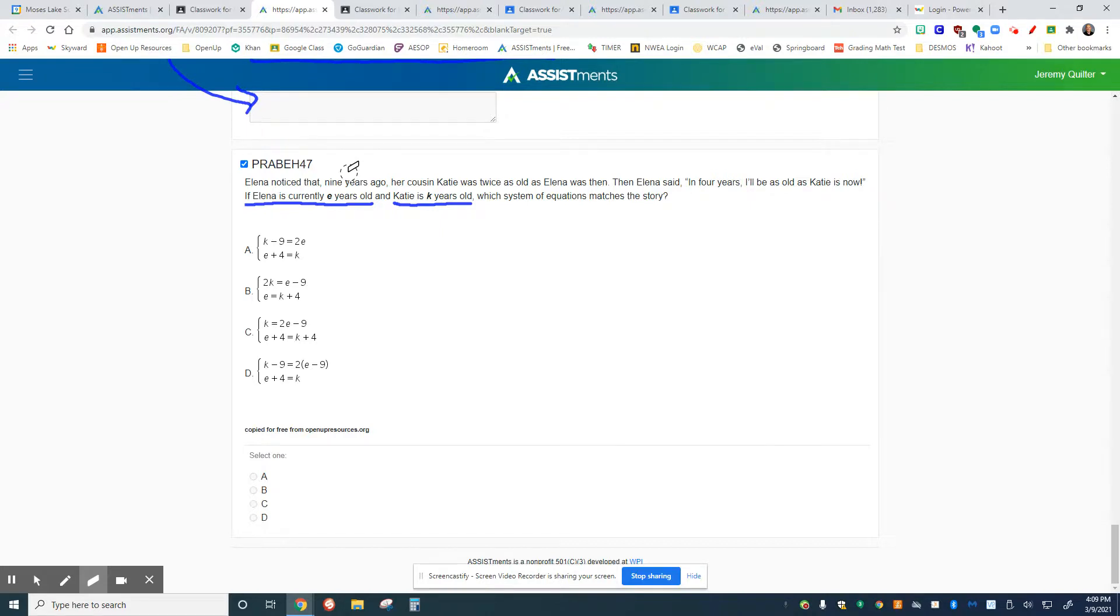And then notice this other one says, in four years, I'll be as old as Katie is now. So what I'm going to suggest to you is this. Try and figure out what the equations will look like as if you're finding one for Katie and then one that you're finding for Elena. Obviously, I didn't use the lower K or the lower E because it's not in one of these ones. But I want you to be thinking specifically about those lines. How can I find an equation that represents Katie's age as well as an equation that represents Elena's age?